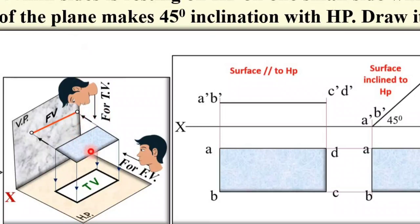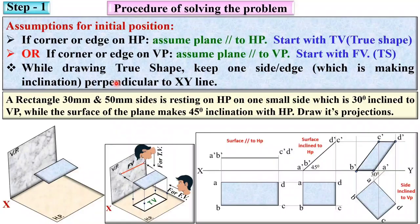In the first stage, the top view is the rectangle below the XY line, and the front view is a line. This is the first stage for this problem.